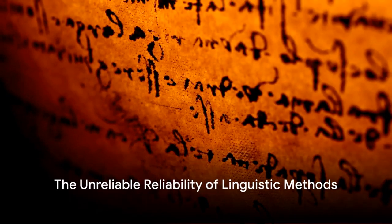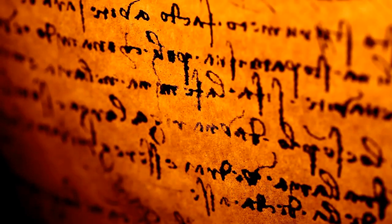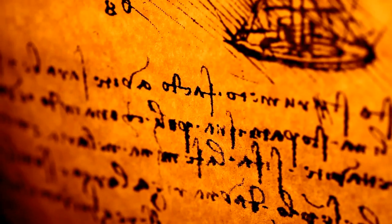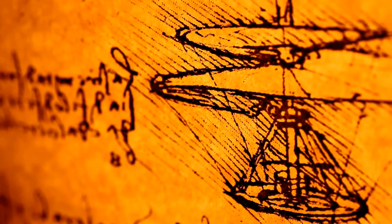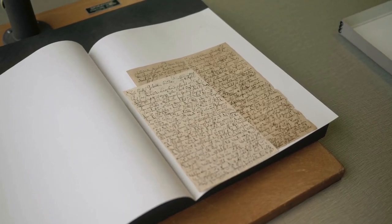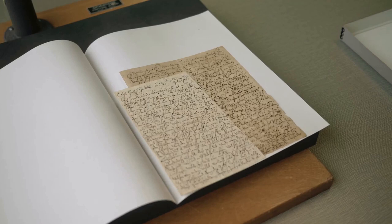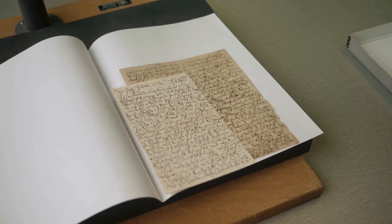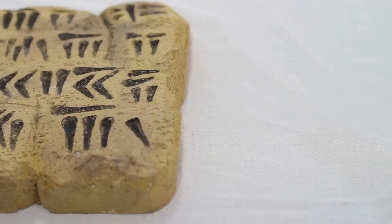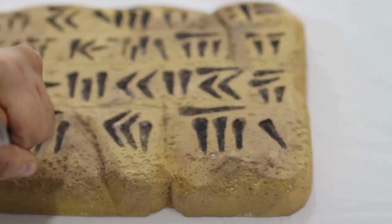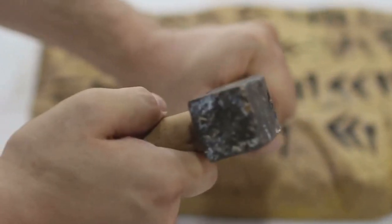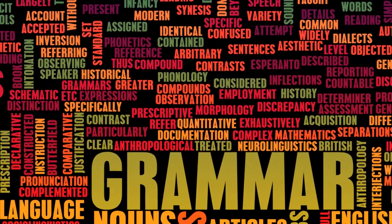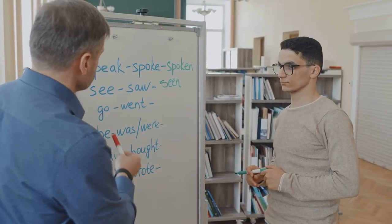Have you ever pondered the reliability of linguistic methods in tracing human history? It's a question that may seem daunting at first, but it's the cornerstone of our understanding of human migration and history. Linguistic methods, at their core, are tools to decipher the tangled web of languages and dialects and their evolution over millennia. They are the keys that unlock the secrets of our past, painting a vivid picture of human journeys and cultural exchanges. But like any other scientific method, they are not without their flaws.